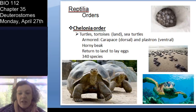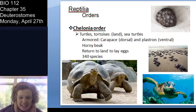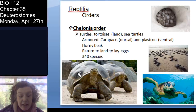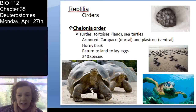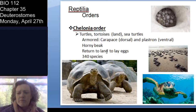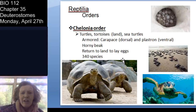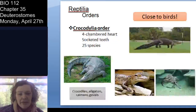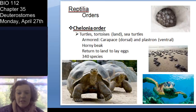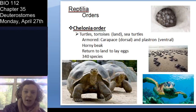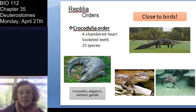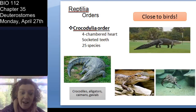Chelonia are the turtles and tortoises — about 340 species. They have a shell they cannot live without: the top part is called the carapace, and the bottom part is called the plastron. They have a horny beak and lay their eggs near water. At this survey level, you mainly need to know they are turtles and tortoises, and that the top shell is the carapace and the bottom is the plastron.